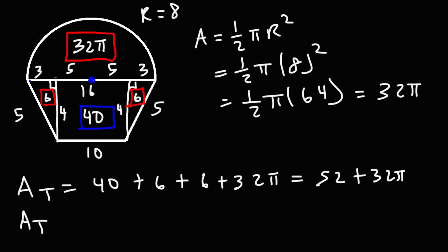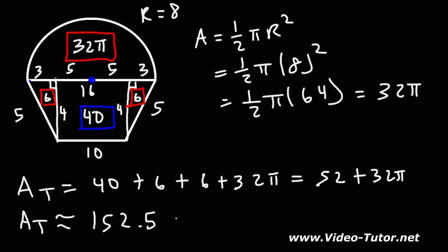Since we weren't given specific units, we say square units. The decimal equivalent of 52 plus 32 pi is approximately 152.5 square units. So that's basically it for this video — now you know how to calculate the area of composite figures that contain semicircles.